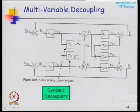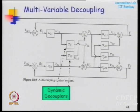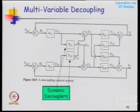The controller block will have four elements - just like your process has four elements which specify the interaction between both inputs and both outputs. Likewise, the error with respect to the first measurement and the error with respect to the second measurement are used through two different blocks. It is a multivariable controller, and the idea is to introduce blocks T12 and T21 such that effectively you have two decoupled loops.